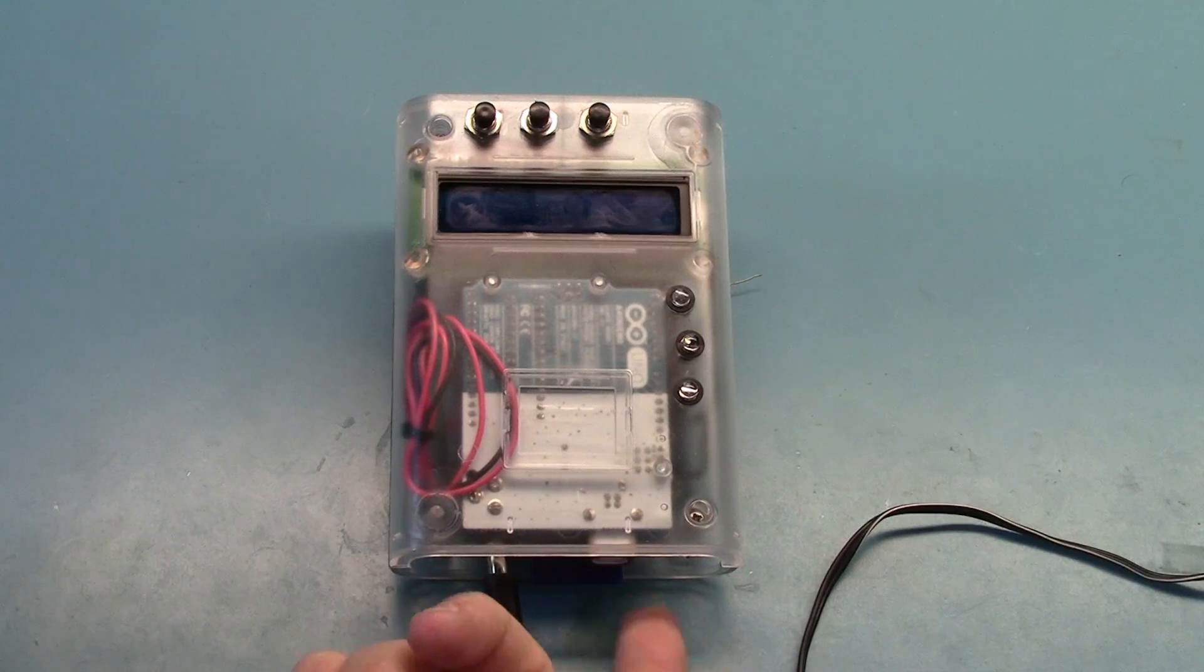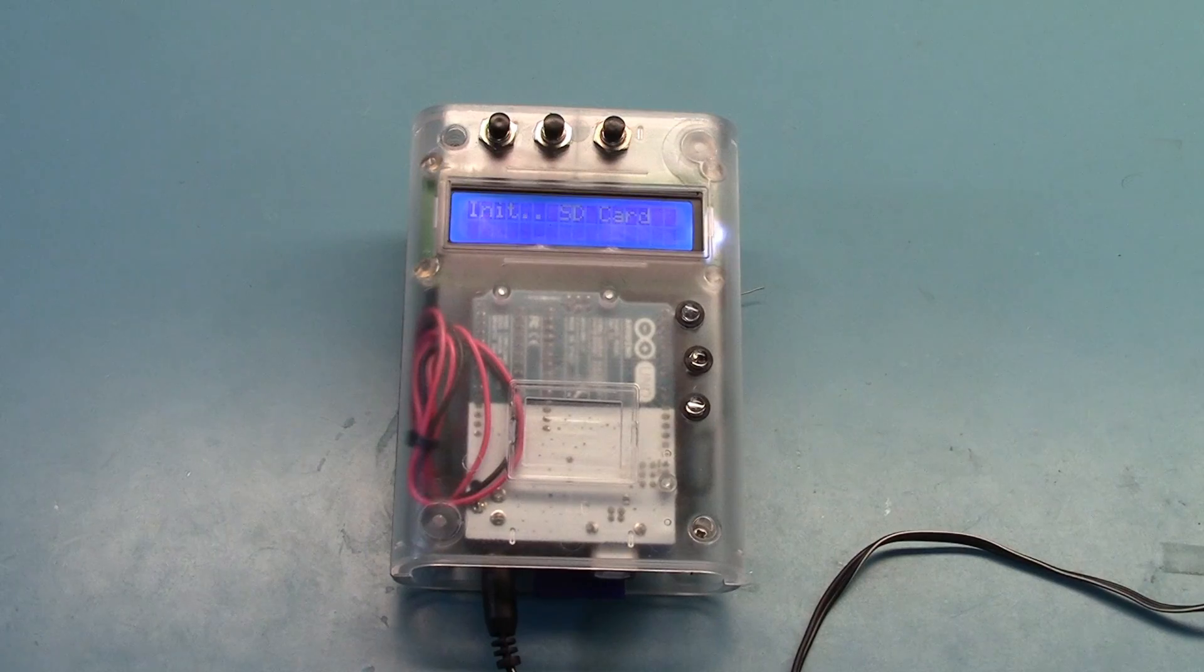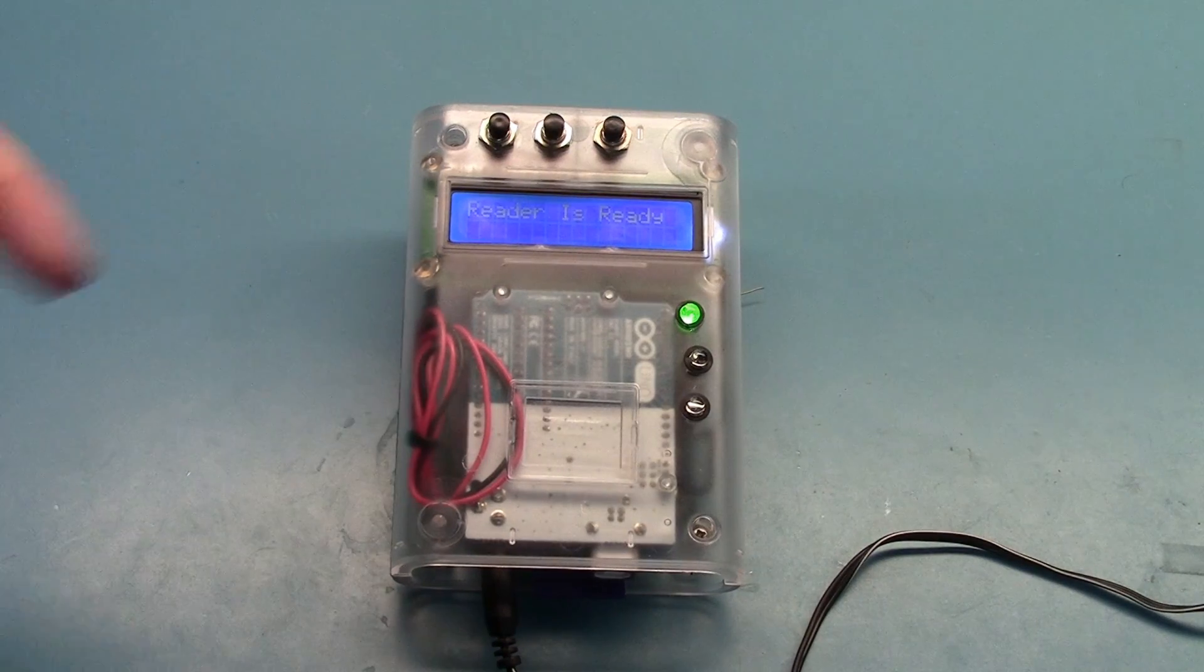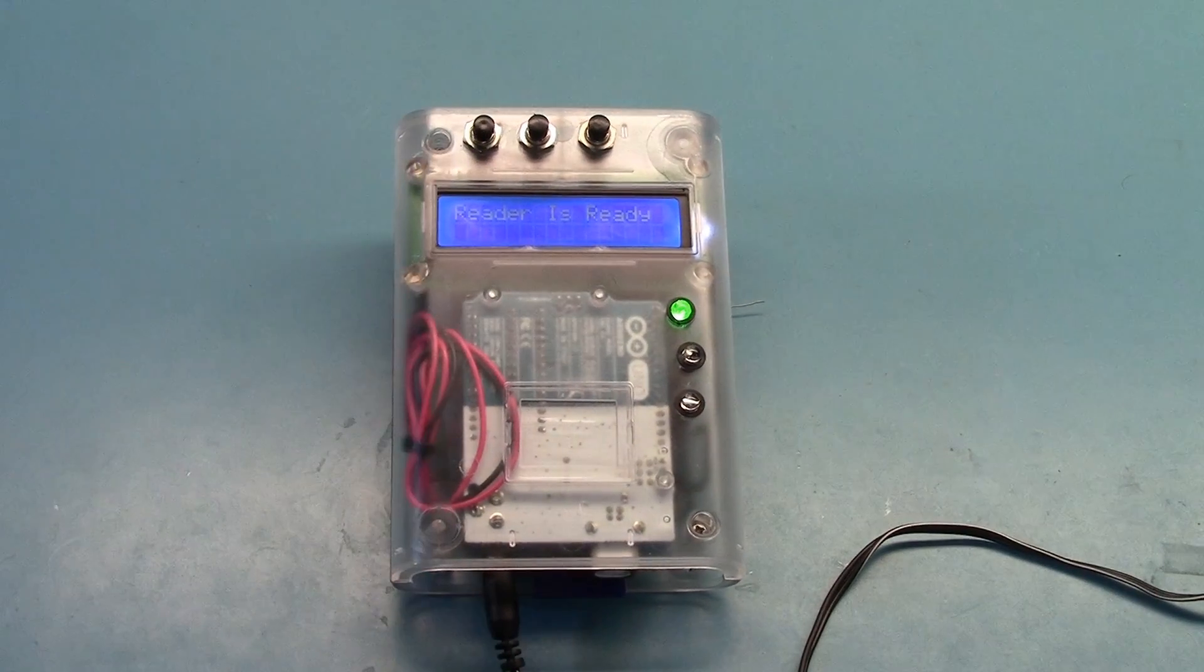So we'll start off. We've got our 4GB SD card inserted in the data logger. We're going to apply power. It tells us initializing the SD card, SD card was present, it's ready to read. Along with ready to read, the green indicator light will come on letting us know that we're ready to read.